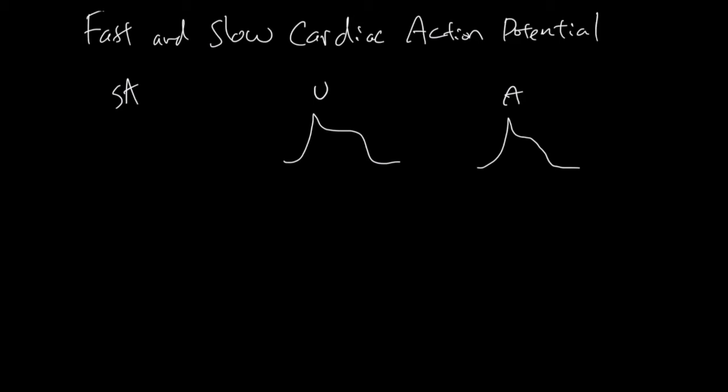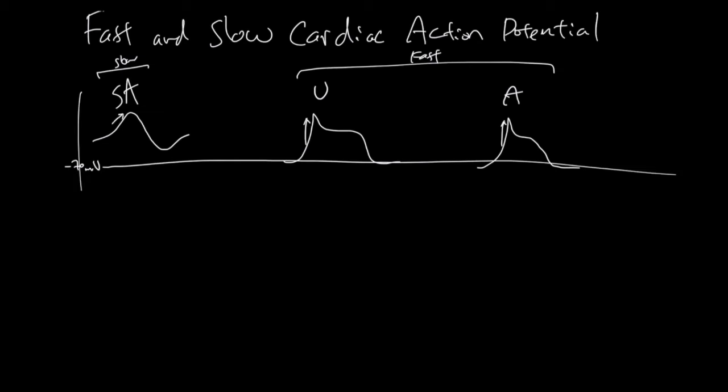They look like this. I'm trying to match the y-axis here, so here is negative 70 millivolt that applies to all of these. These two are considered to be fast, and this one is the slow one, because the V and the A action potentials can both activate pretty fast, but for the SA, it's a little bit slow.